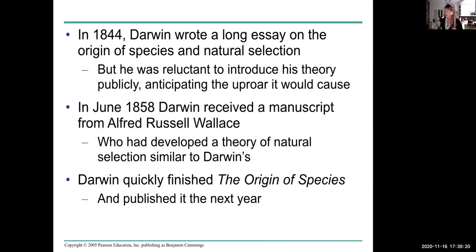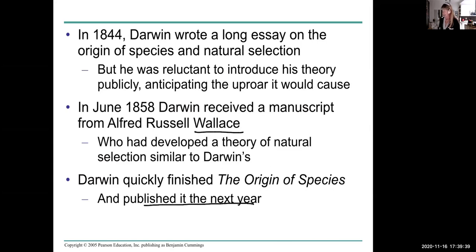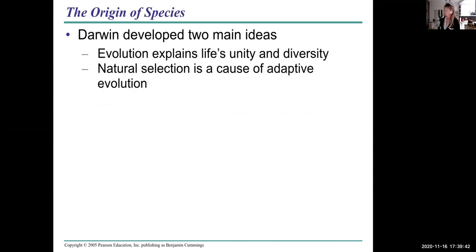Darwin wrote the essay The Origin of Species but didn't really want to publish it. Then he received Wallace's manuscript and realized he better get publishing quickly. He finished it and published it the next year. He developed two main ideas: that evolution explains life's unity and diversity.